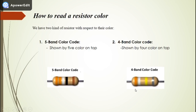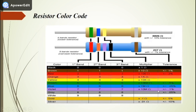This is the resistance color code table. As you can see, it includes different types of colors from black, brown, red, and so on. Each color, according to its position on the resistor, has a different meaning. This applies to both the four-band and the five-band color resistors.